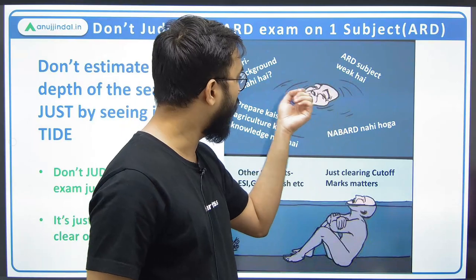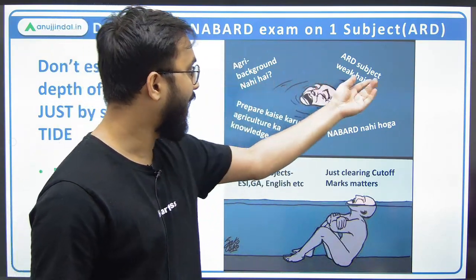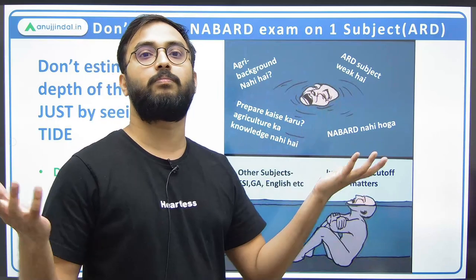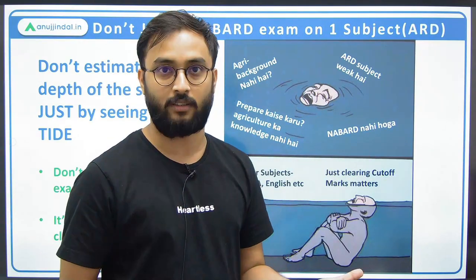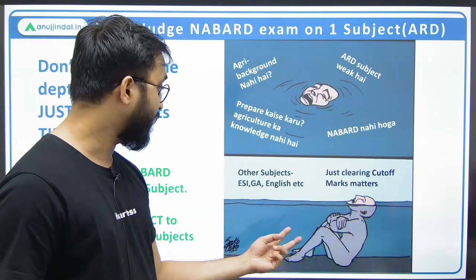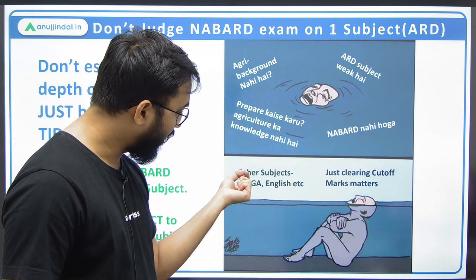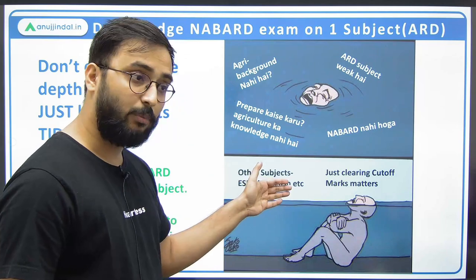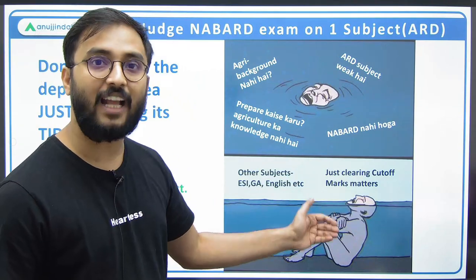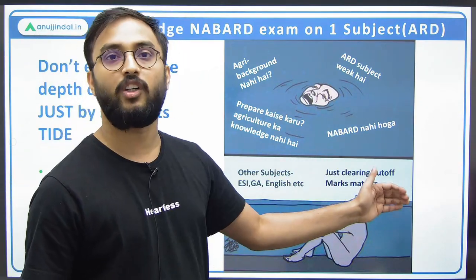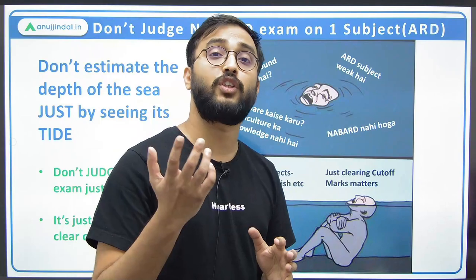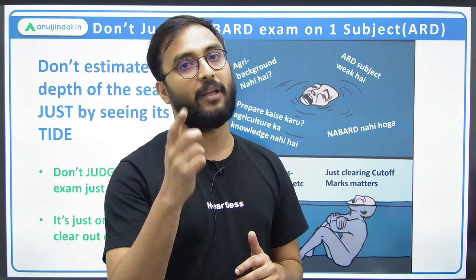I have seen many students who always come asking: 'Sir, agri background nahi hai, agriculture weak hai, NABARD nahi hoga, prepare kaise karun, agriculture ki koi knowledge nahi hai.' They think they can't do the exam. But if you see the reality of the NABARD exam, there are only two important facets — there are other subjects also: ESI, GA, English. All these subjects are important from a merit point of view in Phase 1 and Phase 2, where your actual marks are considered, giving you a chance in the interview round. That's how you become a NABARD officer.